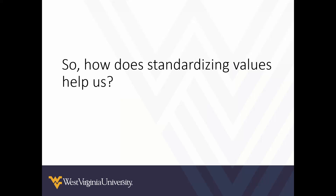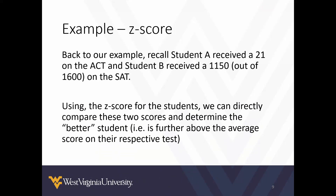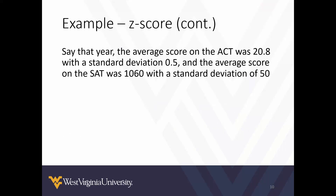So why does standardizing values help us? Using z-scores for our original example, Student A received a 21 on the ACT and Student B received an 1150 on the SAT. We can directly compare these scores by converting them to the same scale and determining which z-score is further above the average. That year, the average ACT score was 20.8 with a standard deviation of 0.5, and the average SAT score was 1060 with a standard deviation of 50.